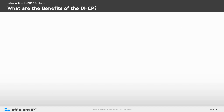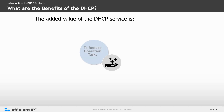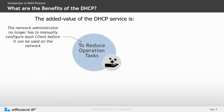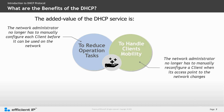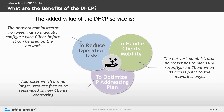What are the benefits of DHCP? The added value of a DHCP server is to reduce operational tasks, where a network administrator no longer has to manually configure each client before it is used on the network. Also, to handle mobile clients — when a laptop is moved from one building to another on a campus, the configuration change would be automatic. And last, to optimize the IP addressing plan: addresses no longer in use are free to be reassigned to new clients.